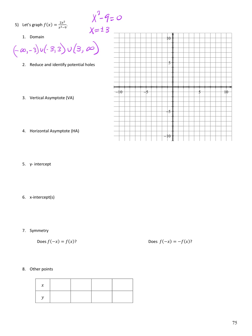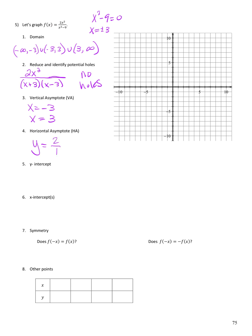Next we reduce and identify any potential holes. 2x² cannot be factored; x² - 9 factors to (x+3)(x-3). There are no common factors on top and bottom, so no potential holes. Vertical asymptotes occur where the reduced denominator equals 0: at x = -3 and x = 3. For horizontal asymptotes, both numerator and denominator have degree 2, so the horizontal asymptote is y = 2/1 = 2.